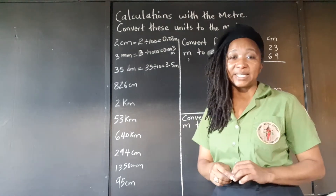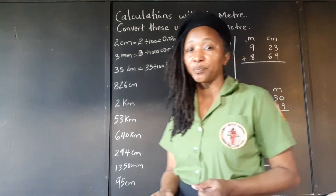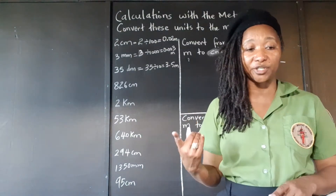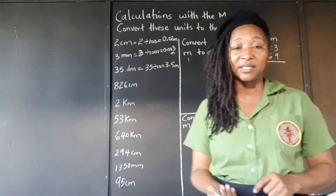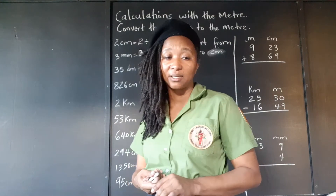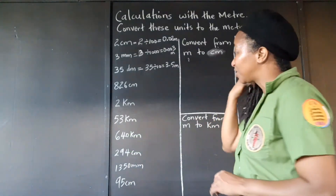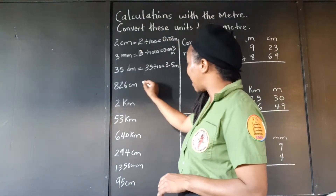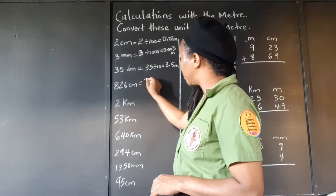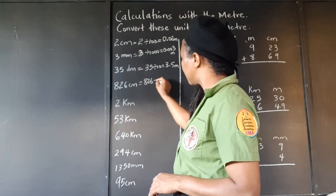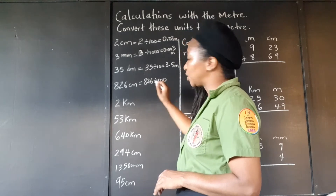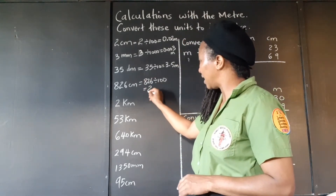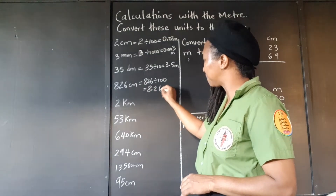826 centimeters to meters. It takes 100 centimeters to make 1 meter. Centimeter is a smaller unit, so to change 826 centimeters to meters we divide by 100 — moving two decimal places back gives 8.26 meters.